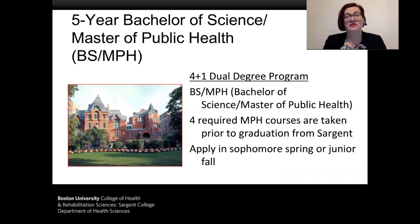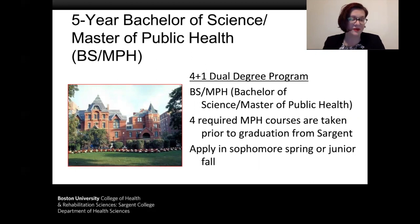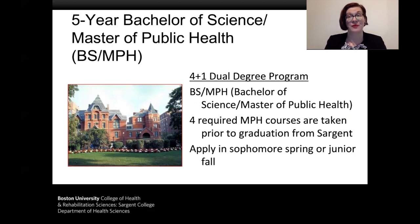We have a five-year Bachelor of Science and Master of Public Health dual degree program in which students complete both degrees in five years of full-time study rather than the six years that combination would generally require. There are four required MPH courses taken prior to graduation from Sargent, after which students matriculate for their plus-one year at the School of Public Health. Students interested in this program can apply in sophomore spring or junior fall. As the Sargent-side advisor, I meet with students about admissions requirements, the application process, the four foundation courses that count toward both degrees, and what to expect from their plus-one year.